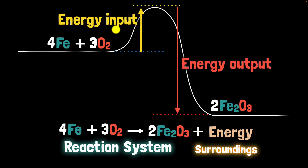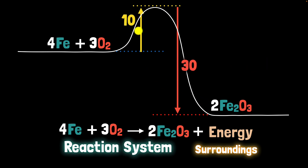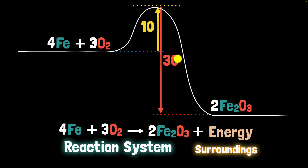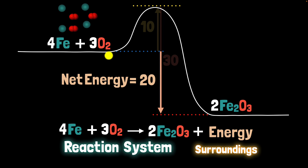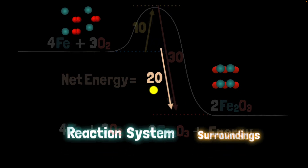The energy output is more than the energy supplied, which makes it exothermic. Using some numbers: say the energy supplied was 10 units and the energy released was 30 units — the balance is that 20 units of net energy was released. In our conceptual example, reacting four atoms of iron with three molecules of oxygen produces two formula units of iron(III) oxide and releases 20 units of energy.